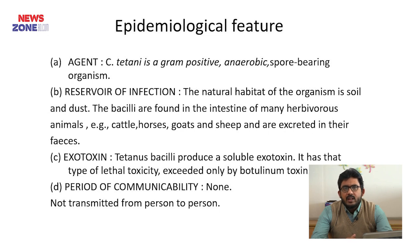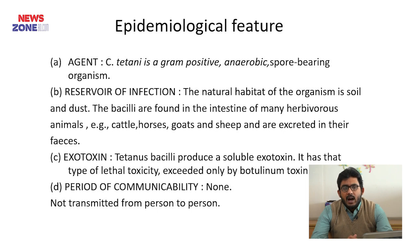Regarding the epidemiological features of Tetanus, Clostridium Tetani is a gram-positive anaerobic spore-bearing organism. The reservoir of infection — the natural habitat of the organism — is soil and dust. The bacilli can also be found in the intestines of herbivorous animals like cattle, horse, goats, and sheep, and are excreted in their feces.